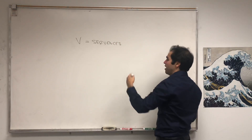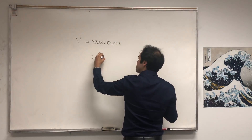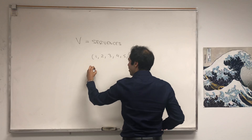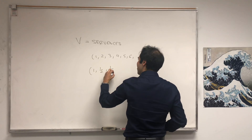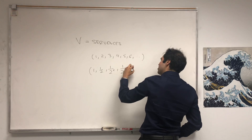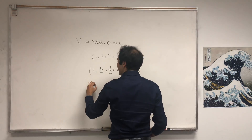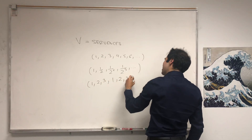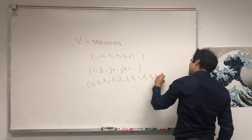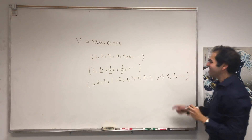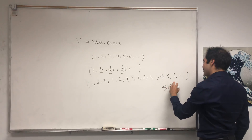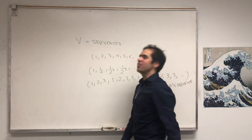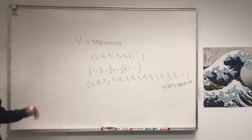For example, you have the sequence one, two, three, four, five, six, or the geometric sequence one, one-half, one-half squared, one-half cubed, and so on. Or my favorite one — I call it the SIA sequence because it goes one, two, three, one, two, three. Anyway, what I'd like to define are two very cool linear transformations: the right shift and the left shift.